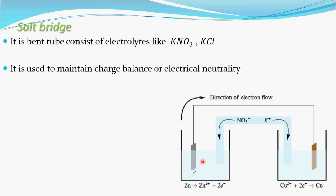In the oxidation half-cell, Zn²⁺ ions are building up while electrons pass through the external circuit, making that solution positively charged. To maintain electrical neutrality, the negatively charged NO3⁻ ions from the salt bridge migrate towards this positively charged solution side.